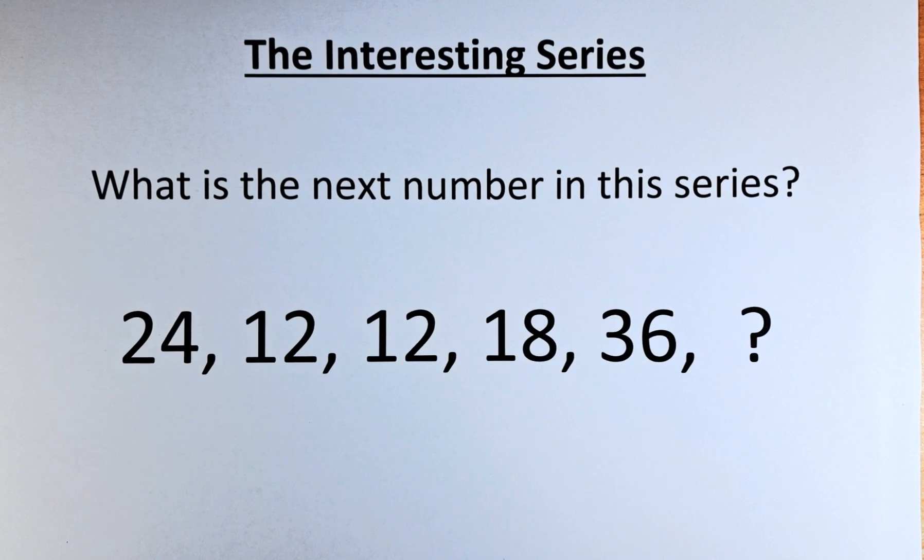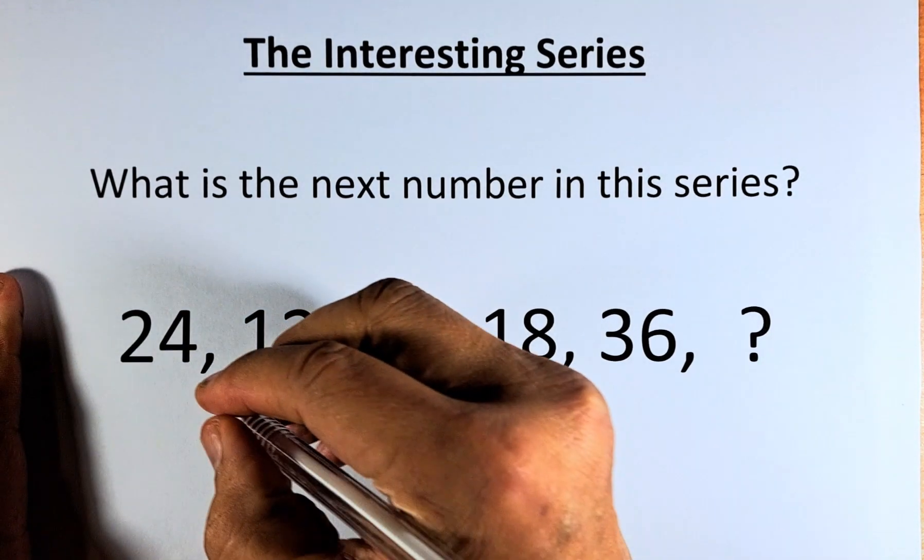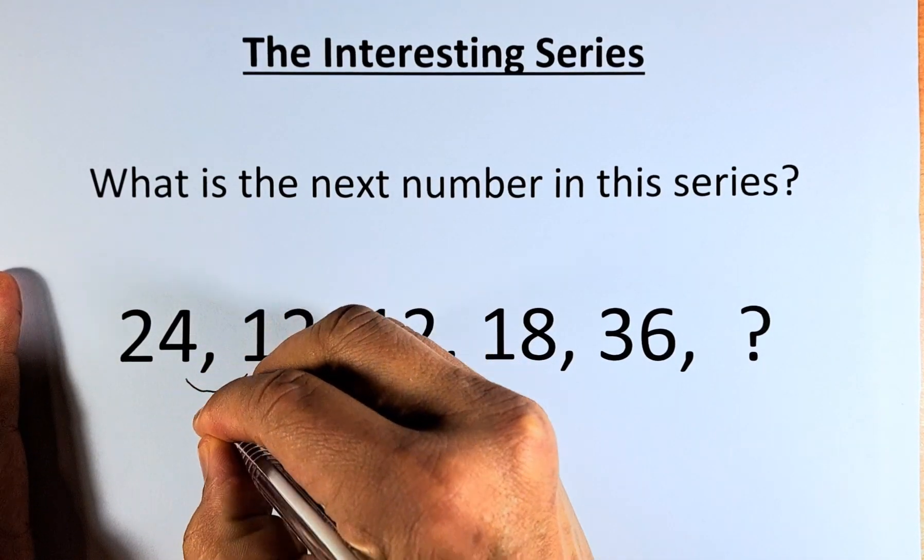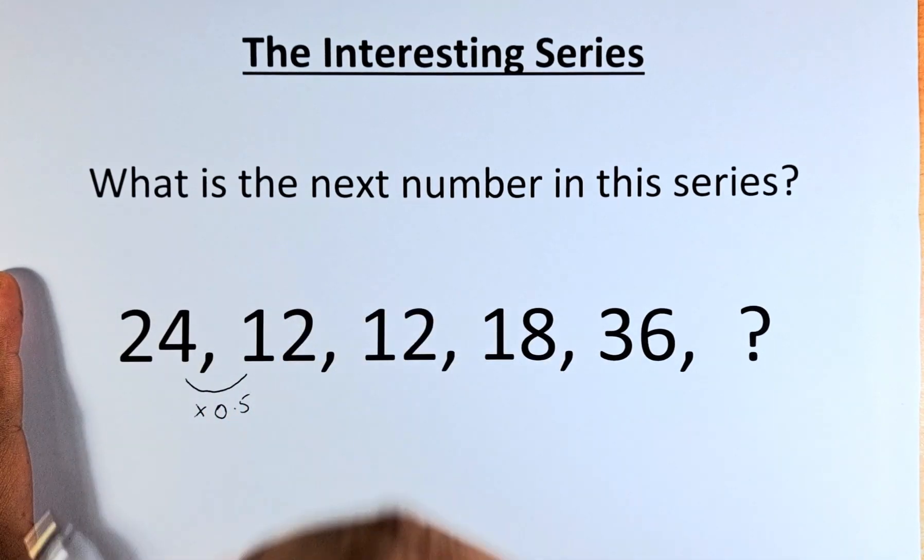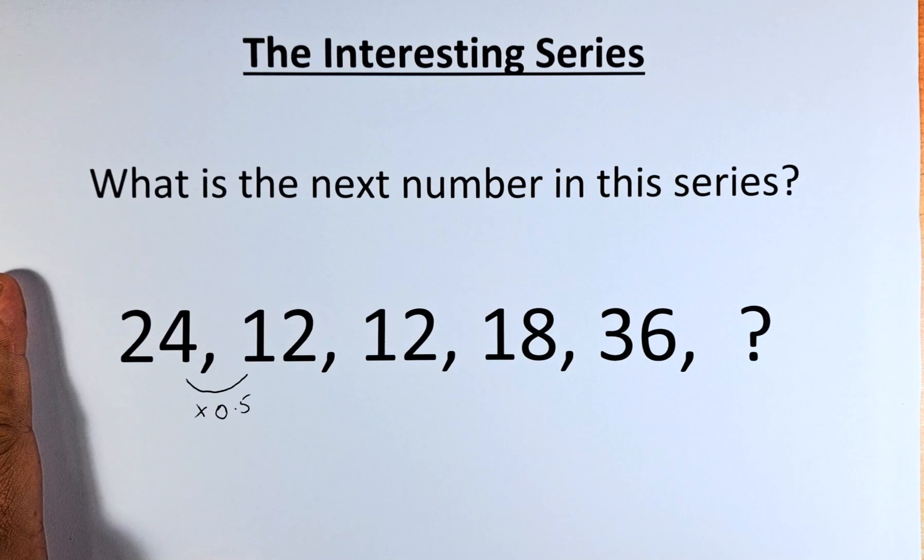Without further ado, let's try to solve this puzzle. So from 24 to 12, it's divided by 2, or similarly, you're going to multiply by 0.5. So 24 times 0.5, or divided by 2, gives us 12.